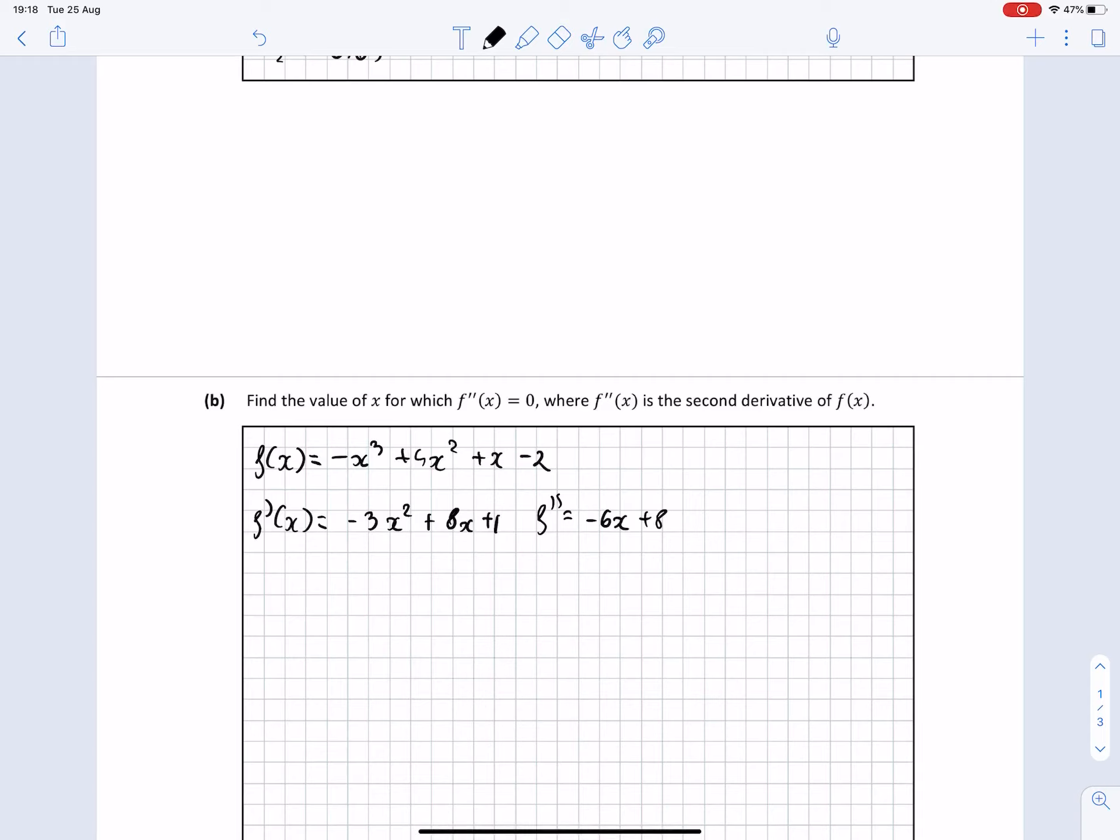Now we have to find the value for minus 6x plus 8 being equal to 0. So that tells me that minus 6x equals minus 8, and from here I'm going to get that x equals 8 over 6, and that can be simplified to 4 over 3. That will be the value for which the second derivative is equal to 0.